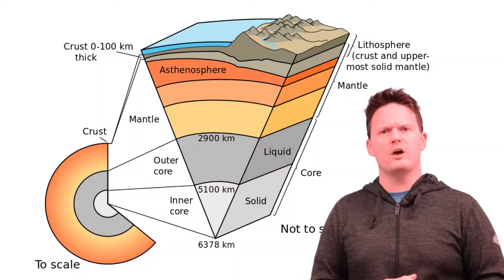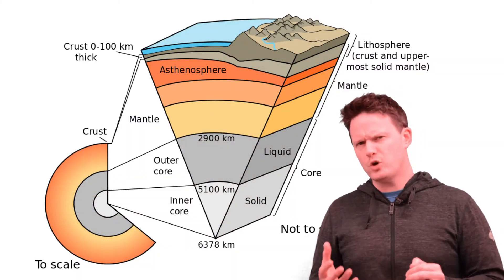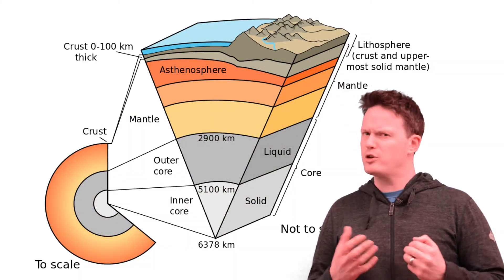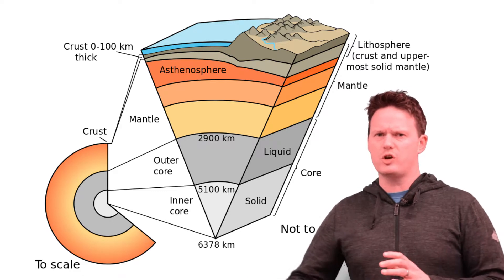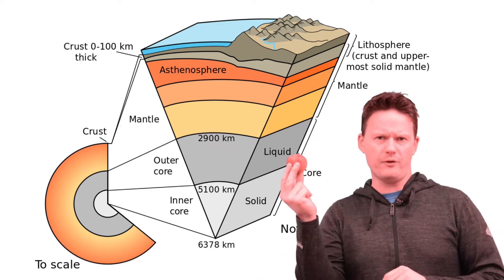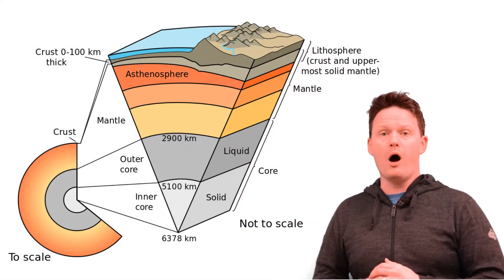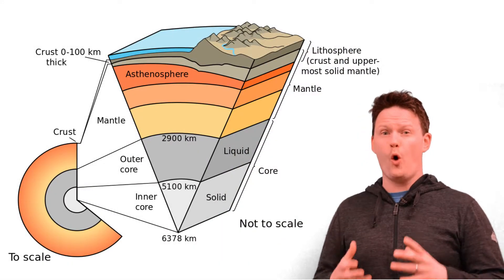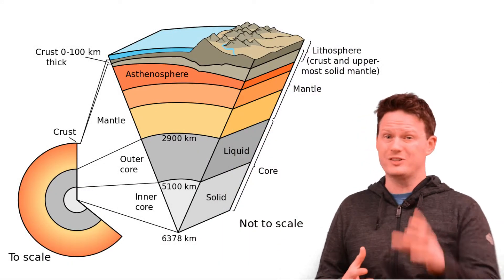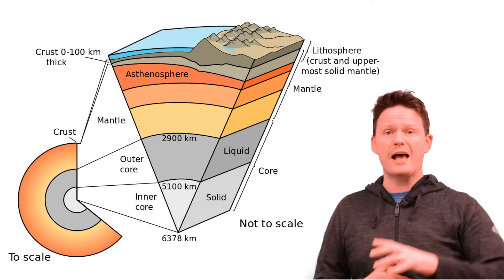First we need to talk about the structure of the earth. A good way to think about the structure of the earth is the structure of an apple. Like an apple, our earth has a core, and this core is super hot.